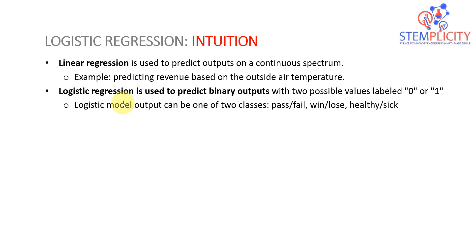When you're presented with a problem and need to choose between linear regression and logistic regression, the first question to ask is: what does the output look like? If the output is continuous — predicting revenue, predicting salary — that's continuous in nature, so you go with linear regression or maybe polynomial regression, where you need an equation to predict the output.